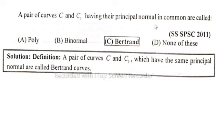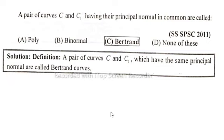A pair of curves C and C1 which have the same principal normal are called Bertrand curves. So option C is correct — that is, Bertrand curves.